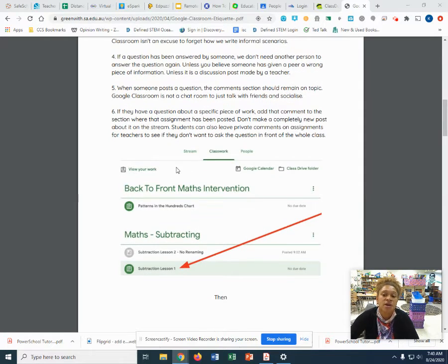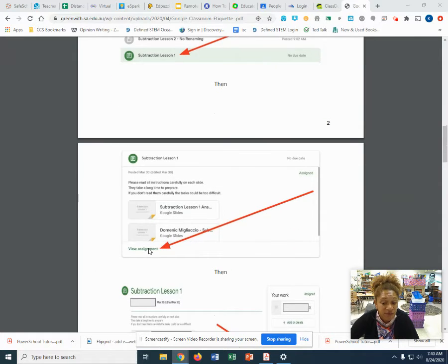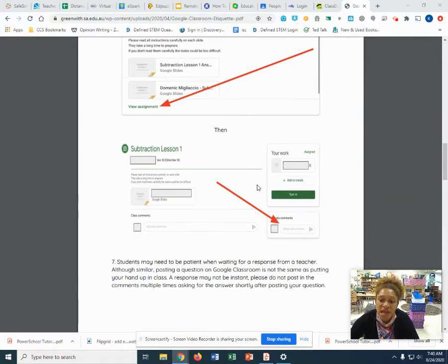If your child has a question about a specific item, not just in general, they can actually add a private comment. So the way they do that is they actually go to classwork, click the assignment, then click view assignment, and then down over here on the right, they'll see private comments. That comment will only come to me and we will have a private conversation separate. If they want a class comment, it will be here. The kids have been awesome with this.